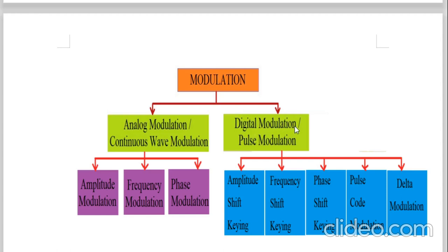Another modulation is called digital modulation, which is also called pulse modulation. A pulse means a sudden change in the voltage level — from high voltage level (HVL) to low voltage level (LVL), or from logic 1 to logic 0, or from LVL to HVL.